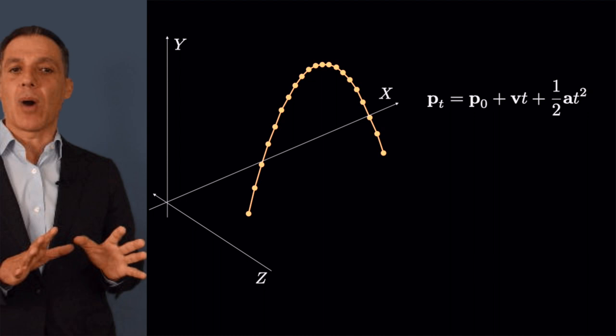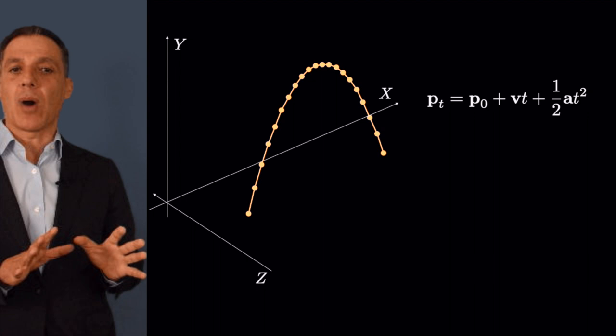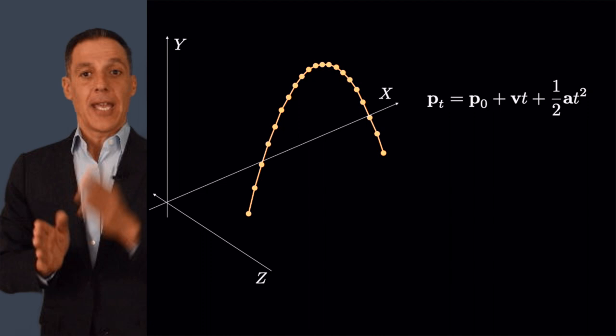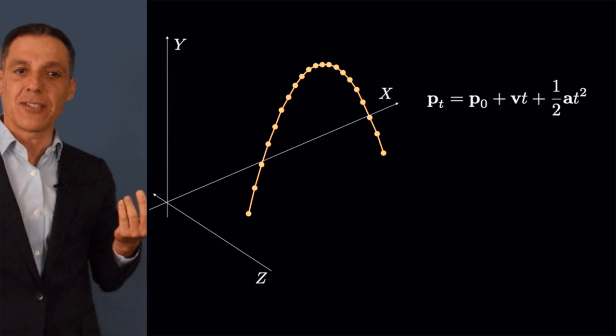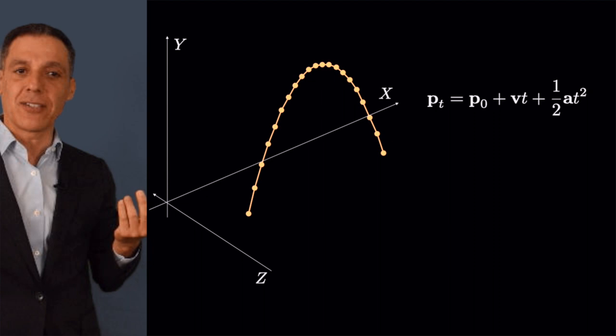That was exactly what we wanted, but what was the constraint? That the plane of the ball's motion and the camera sensor are parallel to each other — so I'm at the midway line and the ball is moving in front of me like this. That's obviously not always going to be the case. So let's talk about how to generalize this to arbitrary relative positions of the camera relative to the ball.